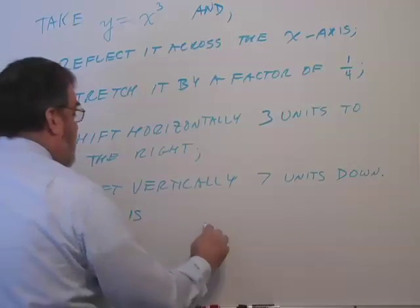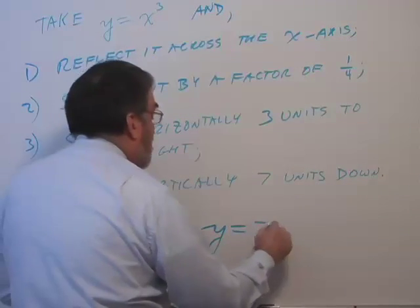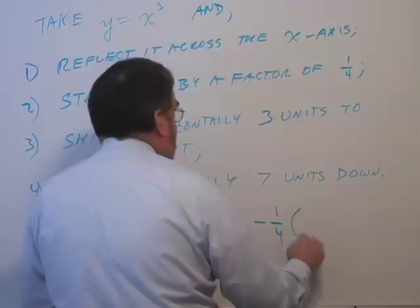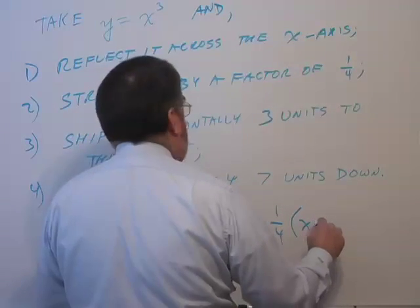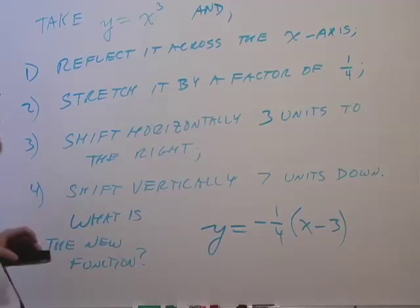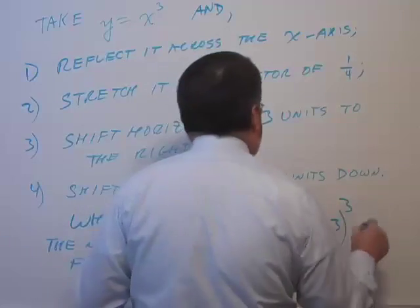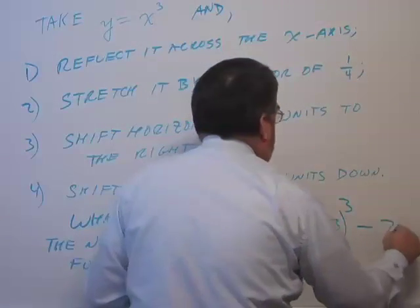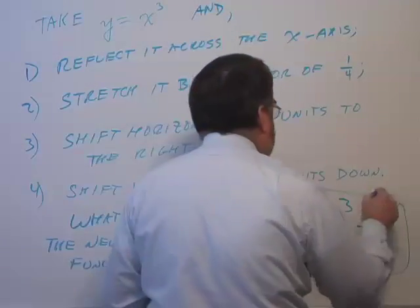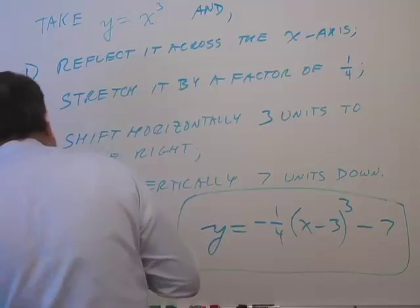So let's see, we have y equals negative one-fourth, and then replace the x with x minus three, three units to the right, positive. And it's cubed, third power. And then seven units down means I'm going to subtract seven. So there's my new function with all those transformations.